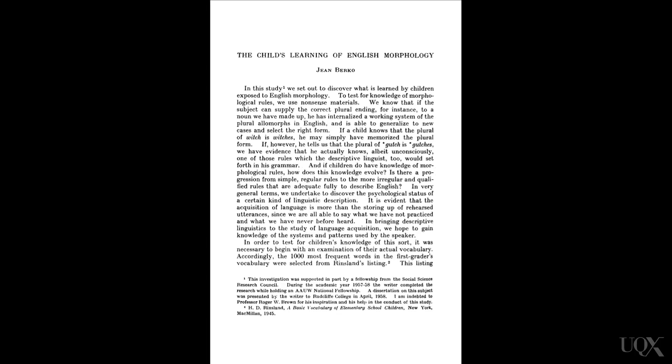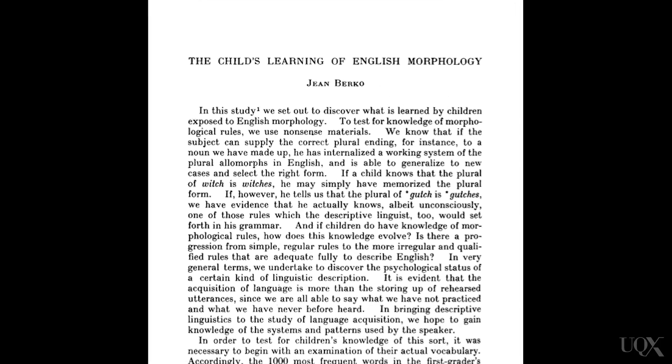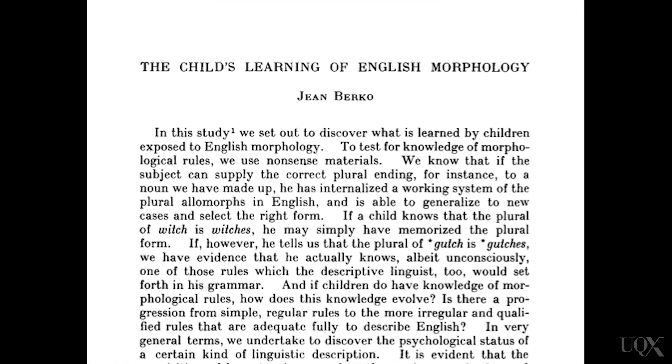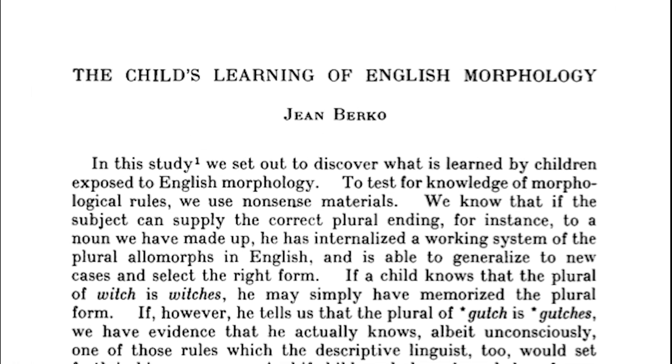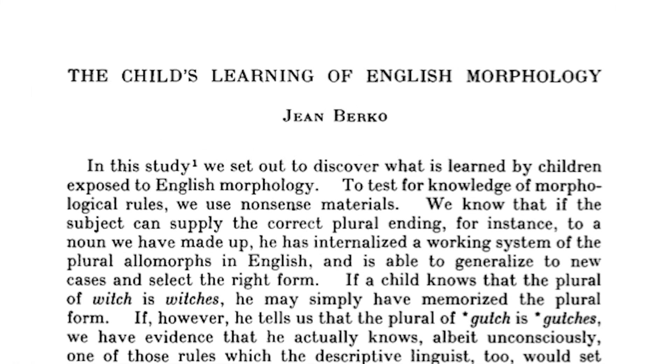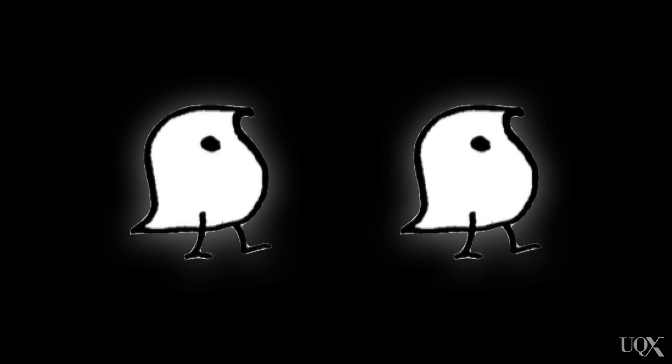Another issue about poverty of the input is that you can put children in a context where they will say something that they could never have heard before. Here's a very simple example by Jean Berko Gleason. Gleason brought four to seven year olds into the lab. She showed them this and said, 'This is a wug.' Then she gives them a little test and says, 'These are two...' and the little four to seven year olds say, 'Wugs.'